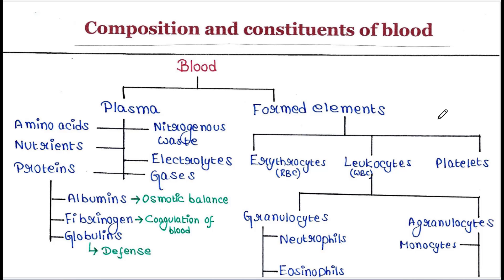Blood is composed of two elements: plasma and formed elements. Plasma is the liquid part of blood and it contains mainly water. Formed elements are actually blood cells.